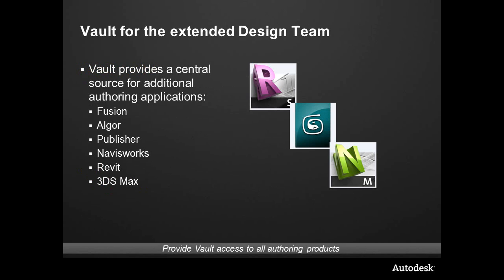For the extended design team that might need to consume things — for instance, if you need to pull information into Fusion and work with it — Fusion has Vault access, so you can check it directly back in, capturing all of the work and effort that you put into it. We also have support for Inventor Simulation or Algor in capturing all of the information and necessary data that engineers need. Likewise, for Inventor Publisher, technical illustrators that need to take data and create their tech pubs can open up, save, and capture all of this inside of one common location.